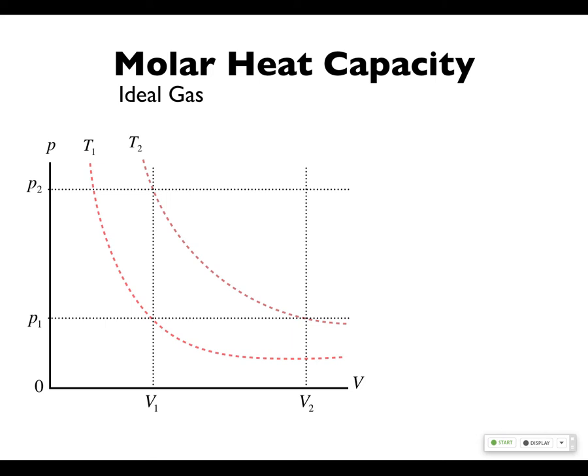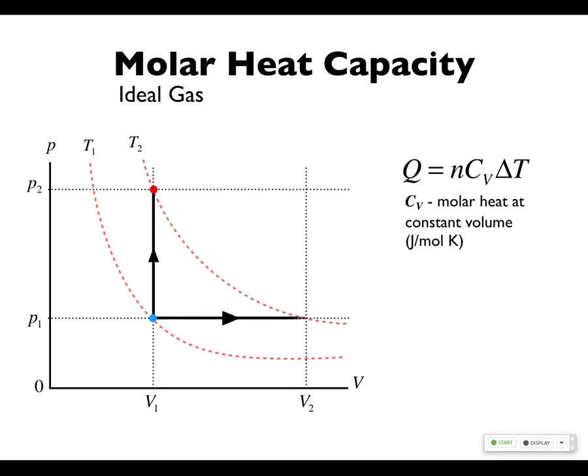And the temperature along the other one, constant. So if you go this way, the heat here is nCv delta T. This is the molar heat at constant volume. If you go this way, you have the same temperature change, but you have a different heat transfer. This would be nCp delta T because this is the constant pressure. So the change in heat is different, the heat transfer is different. The change in temperature is the same.